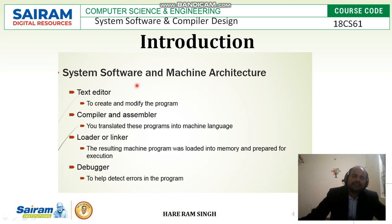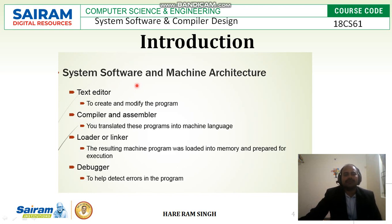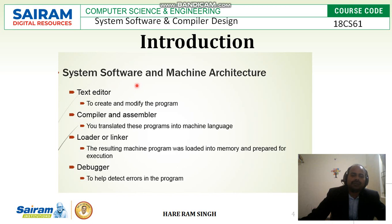The different kinds of system software include text editors, which are used to create and modify programs — it is where we write and enter data. Then compiler and assembler, which translate programs into machine language. The compiler converts high-level language into object code or object program. Then loader and linker load the resulting machine program into memory and prepare it for execution. Then the debugger, which helps detect errors in the program.